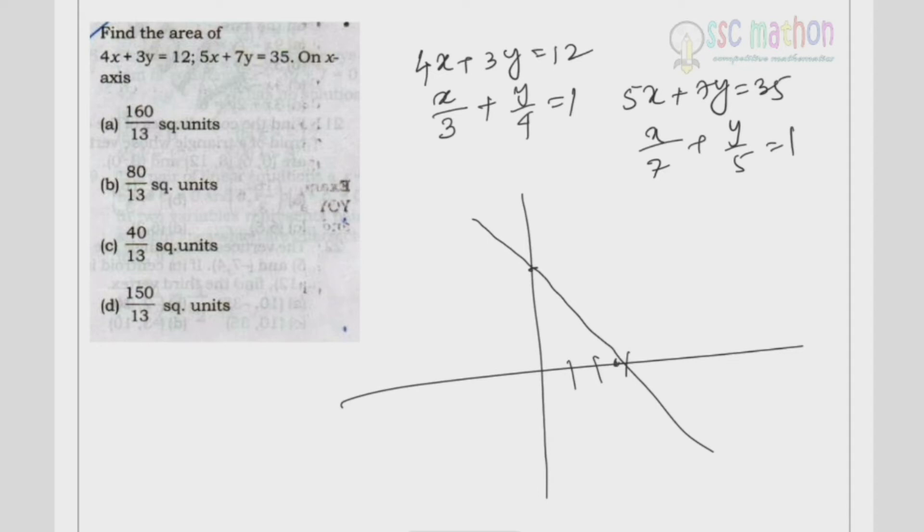They are going to meet in the second quadrant, okay. 1, 2, 3, 4. Now 7, 5: 3, 4, 5, 6, 7 and 4, 5. That means they are going to intersect in quadrant number 2.